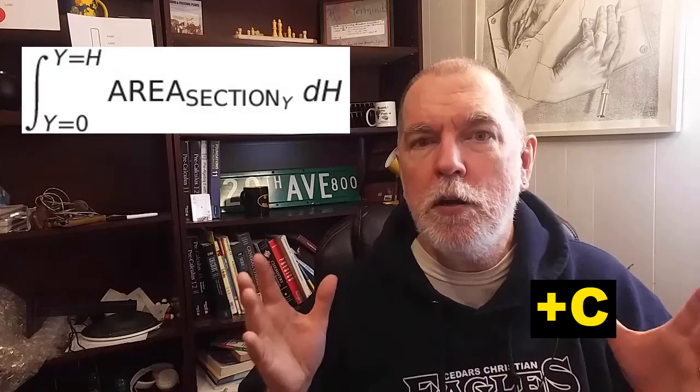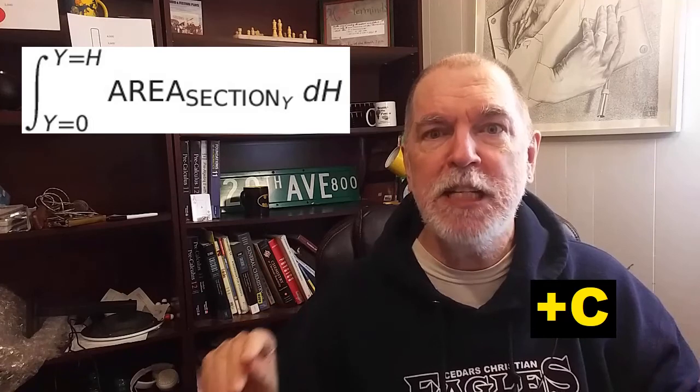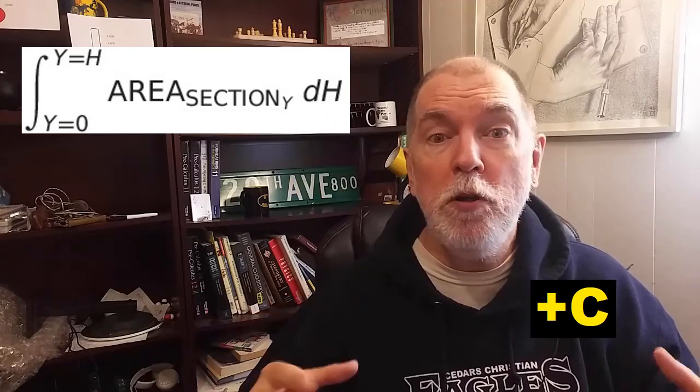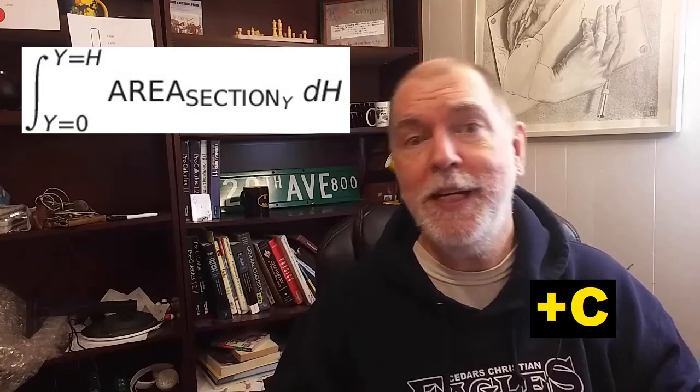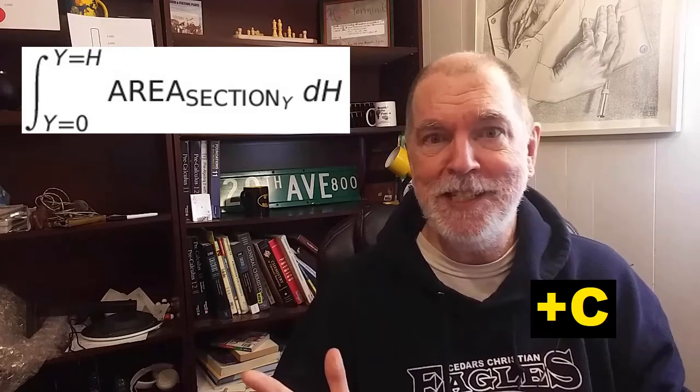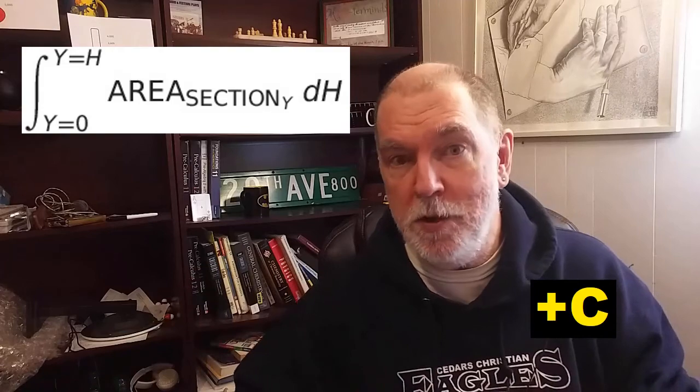Think of each cross section as having an infinitesimal thickness, which we can call dh. The total volume of each object is the sum of these infinitely thin slices, as summarized by this lovely abuse of calculus notation.